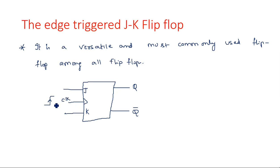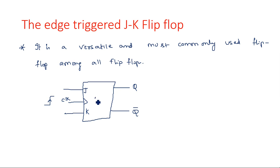Most generally we are using a positive edge trigger flip-flop. If you want to represent a negative edge trigger flip-flop, then we need to show a down arrow from logic 1 to logic 0 transition with a bubble at the clock input. That bubble shows that it is a negative edge triggered flip-flop.